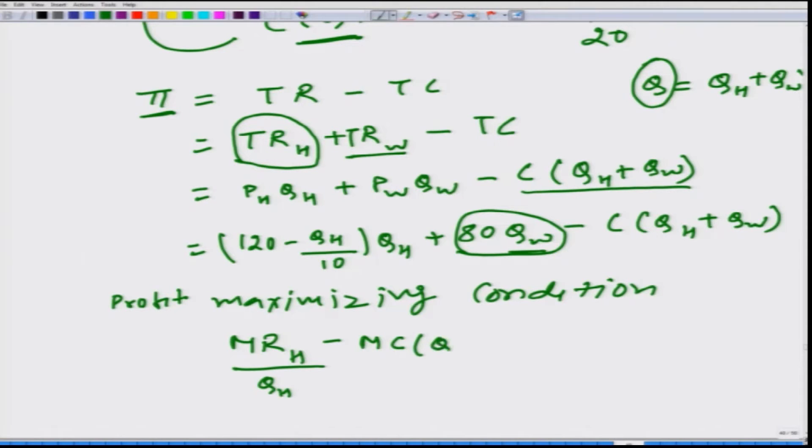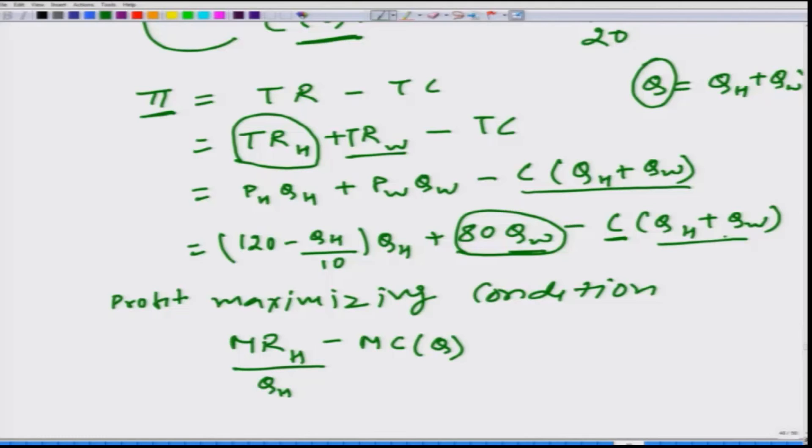Then we have to differentiate this C with respect to QH, but notice C is a function of QH plus QW. We can differentiate this C with respect to Q and we get marginal cost. We are obtaining at Q, because when QH increases by 1 unit while keeping the QW fixed, QH plus QW also increases by 1 unit. If we differentiate, first we are differentiating C with respect to Q and then again Q with respect to QH. Because Q is a simple linear function of QH, what we get here is just 1 and this should be equal to 0.